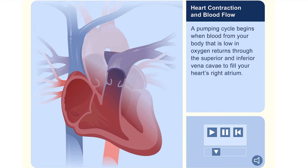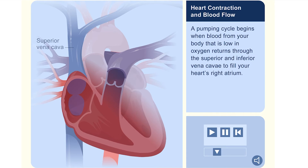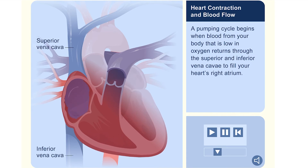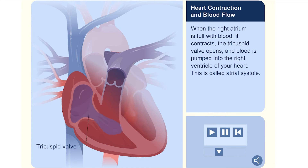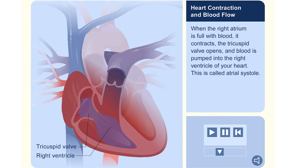A pumping cycle begins when blood from your body that is low in oxygen returns through the superior and inferior vena cava to fill your heart's right atrium. When the right atrium is full with blood, it contracts. The tricuspid valve opens and blood is pumped into the right ventricle of your heart. This is called atrial systole.